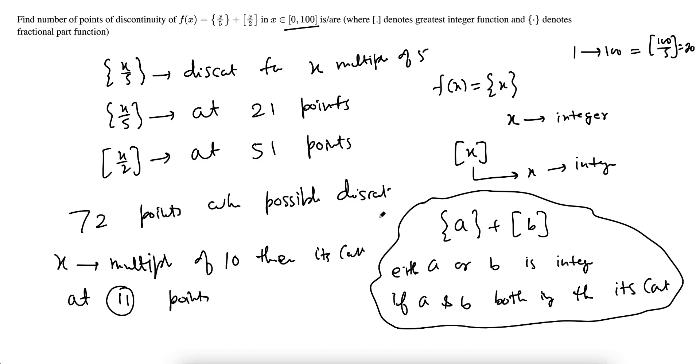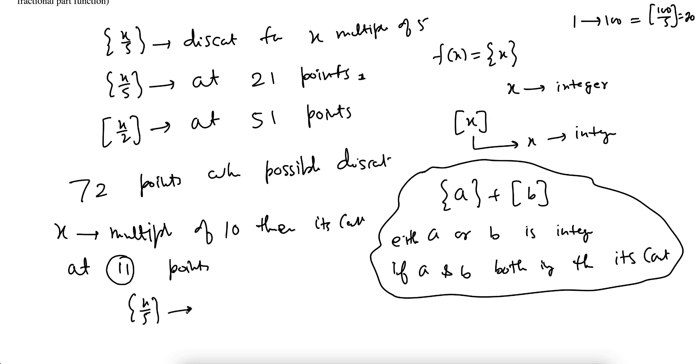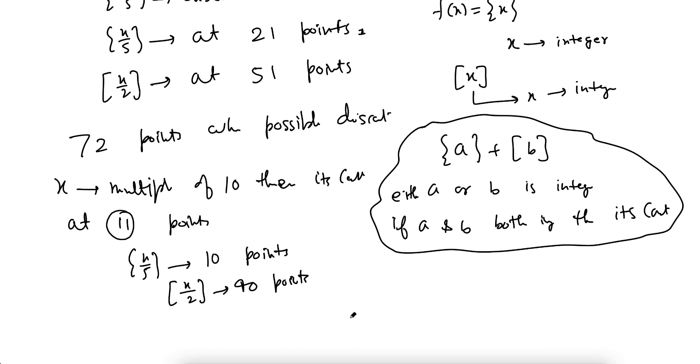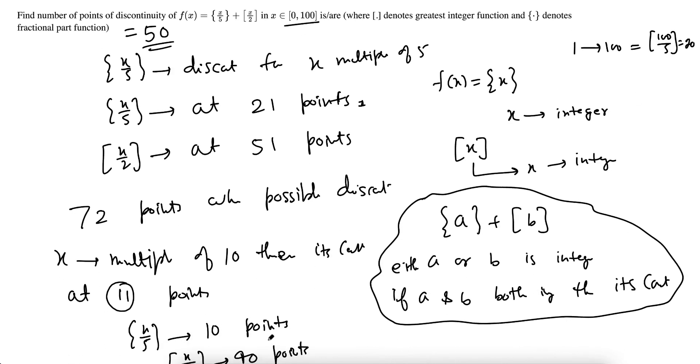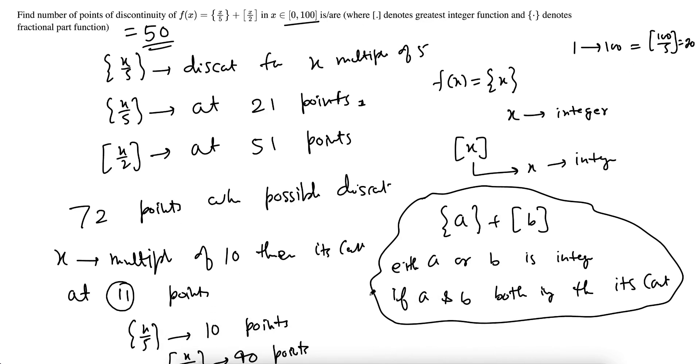Did you understand my point? So at 11 points this is continuous. So that 11 points is there in both. So basically, the fractional part of x by 5 will be discontinuous at 21 minus 11 means 10 points. And greatest integer of x by 2 will be discontinuous at 51 minus 11, at only 40 points. I hope you're getting all of this. The total answer will be total number of discontinuity will be 50, 40 plus 10. All are different points.